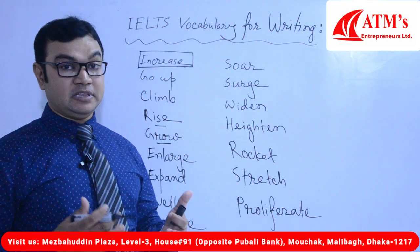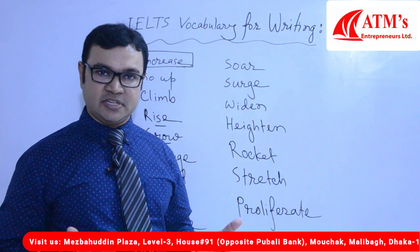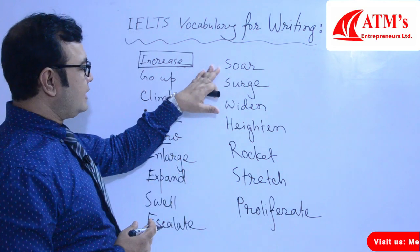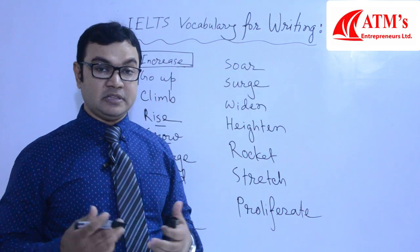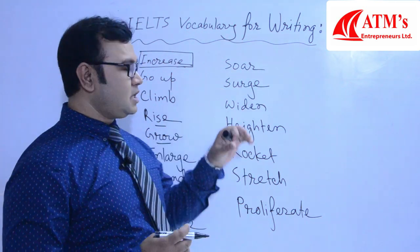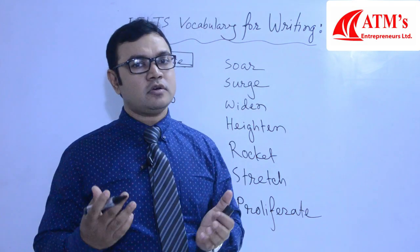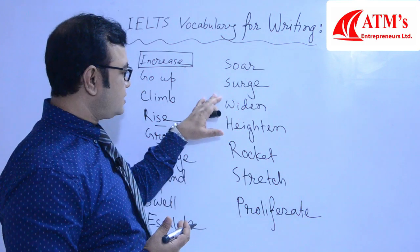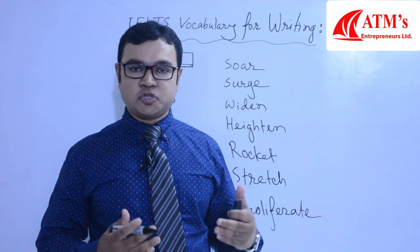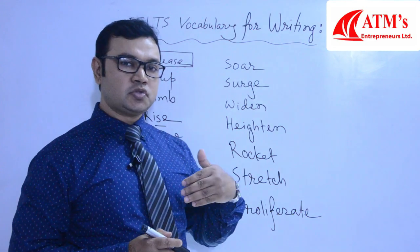You can also write 'soar' — soar refers to rapid, sharp increase. Then there is 'surge' — surge also means growing rapidly or suddenly. Then 'widen' — wide, meaning the gap or value will be growing wider. Then 'heighten' — heighten refers to the fact that activity or a value has increased significantly. You can also use 'proliferate' to express rapid growth.